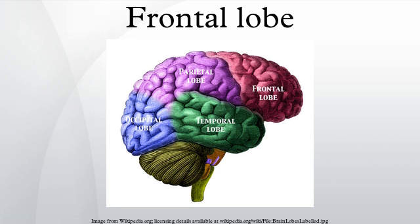Damage to the frontal lobe can occur in an assortment of ways and result in many different consequences. Transient ischemic attacks and strokes are common causes of frontal lobe damage in older adults. These can occur due to blockage of blood flow to the brain or rupturing of a blood vessel aneurysm. Other causes include head injuries such as traumatic brain injuries from accidents, Alzheimer's disease, Parkinson's disease, and frontal lobe epilepsy.